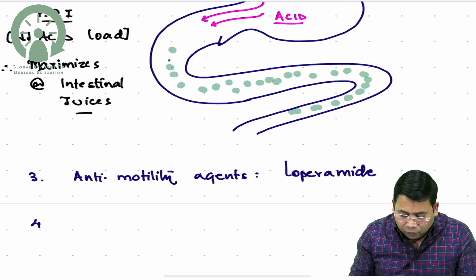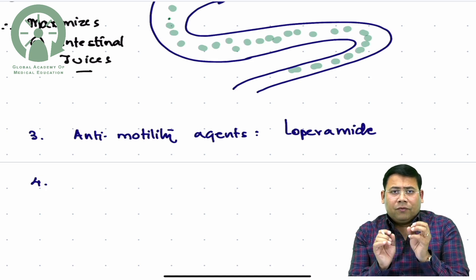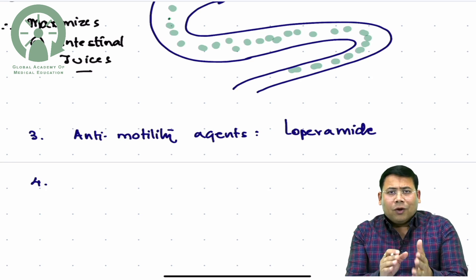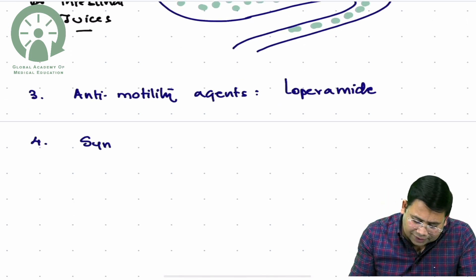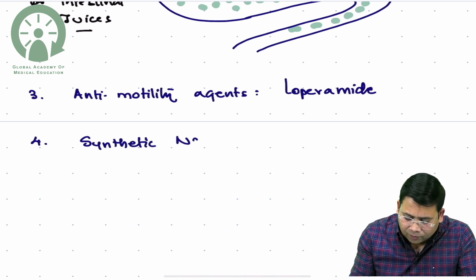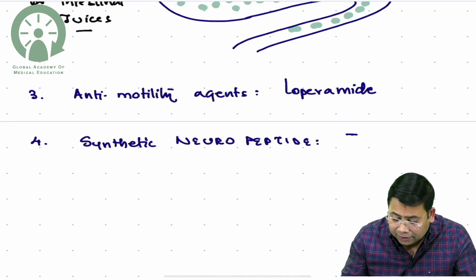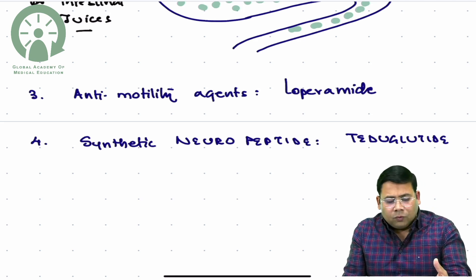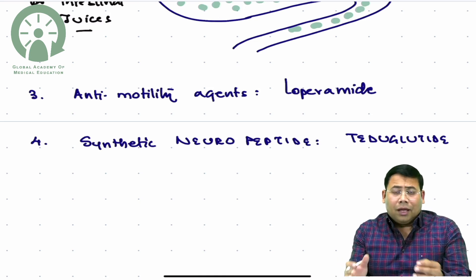The fourth measure is the use of neuropeptide analogs such as incretins and bombесins. These neuropeptides act as the natural brakes of the duodenum and jejunum. We have synthetic neuropeptides, and one very important agent is teduglutide. Teduglutide acts as a natural brake of the intestine, enhancing the time duration of interaction between food and the bowel.